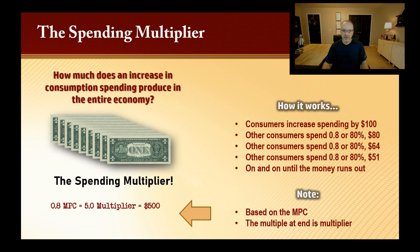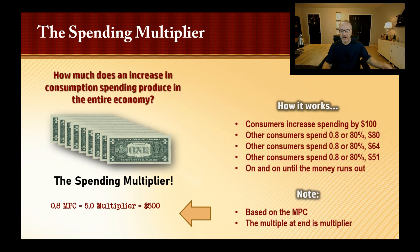An MPC of 0.8 produces a multiplier of five. So if spending increased by $100 with an MPC of 0.8, you multiply $100 by five and get $500 total impact on the economy. The formula for the spending multiplier is: one divided by (one minus the MPC). A 0.5 MPC gives you a multiplier of two, so you would get only $200 total effect in the economy from that $100 in additional spending.